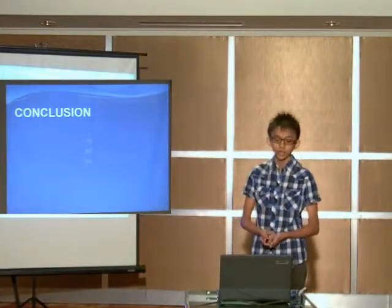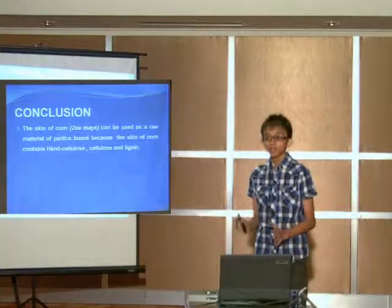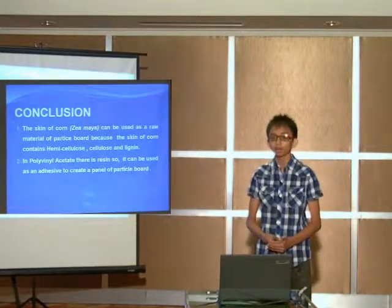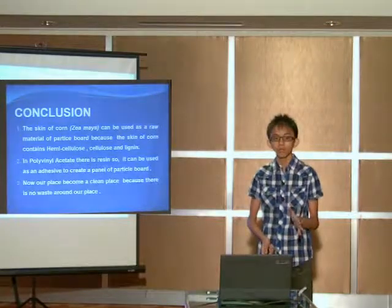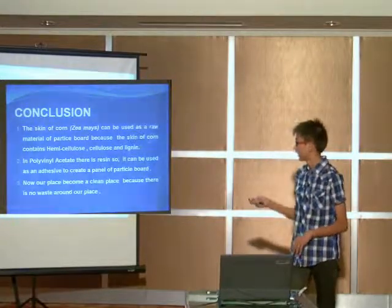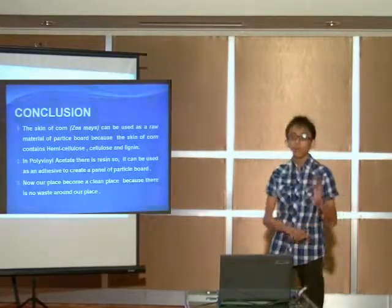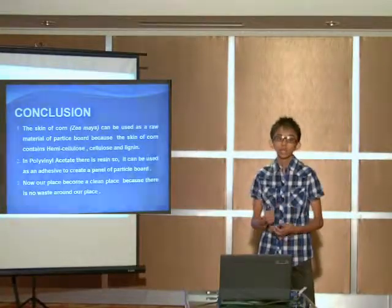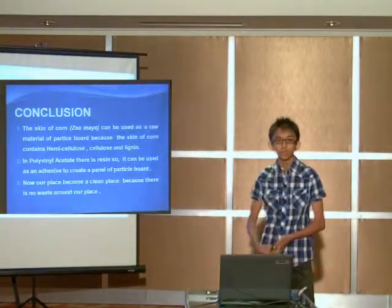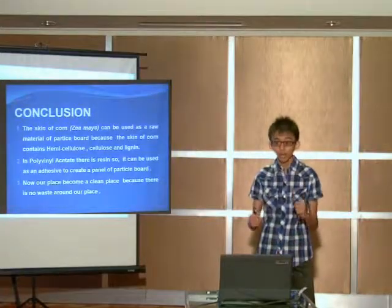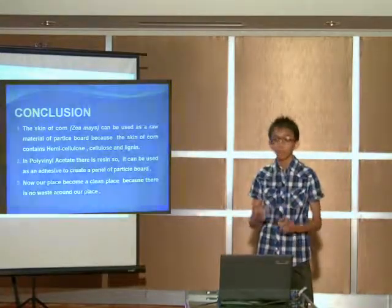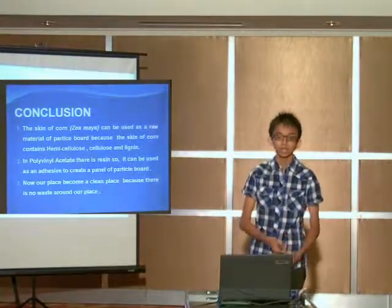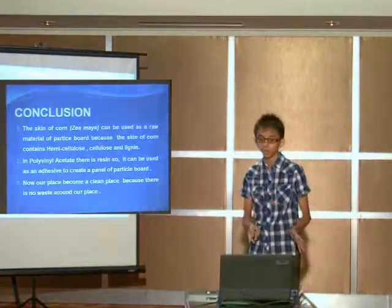So the conclusions are: first, the skin of corn can be used as a raw material for the manufacture of particle wood, because the skin of corn contains hemicellulose, cellulose and lignin. And in polyvinyl acetate, there's resin or stack, so it can be used as an adhesive to bind one particle to another particle, to create one panel of particle wood. And now our place has already become a clean place, because there is no more waste around our place.